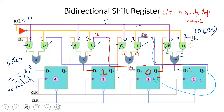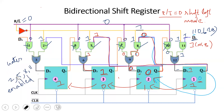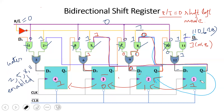Similarly, LSB is 1, MSB is 1. D3 gets 1 shifted, D2 gets 1 shifted. After all clock pulses, the data is serially retrieved from Q4. This is the shift-left mode of operation.